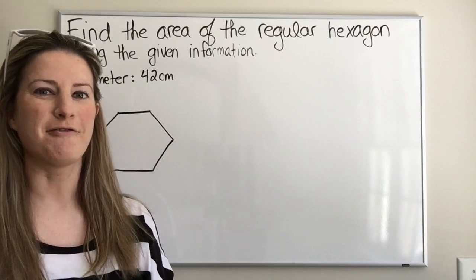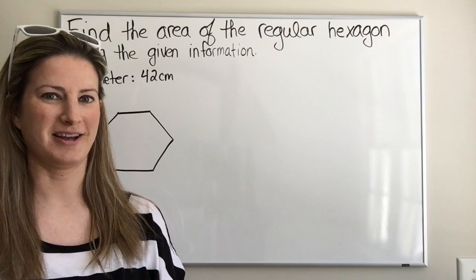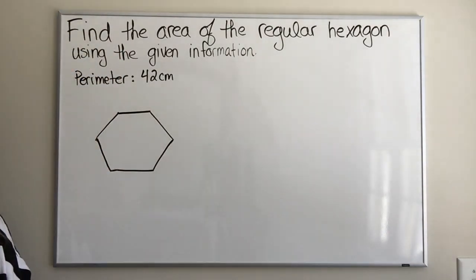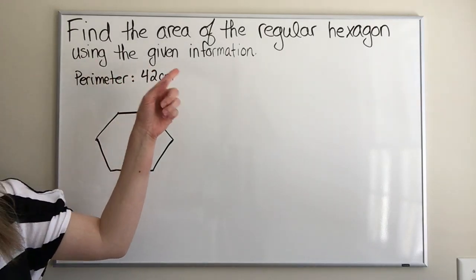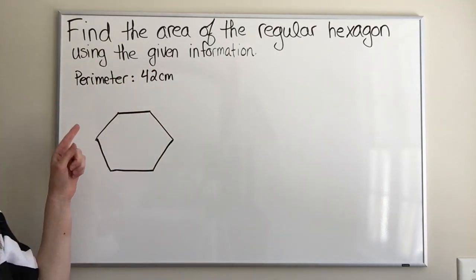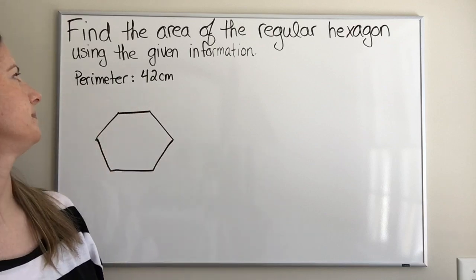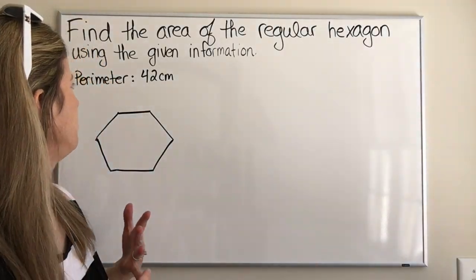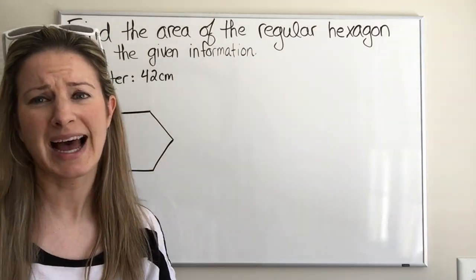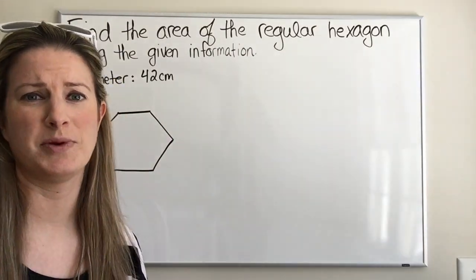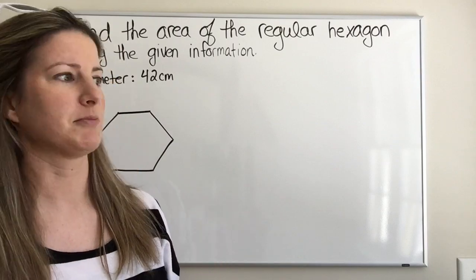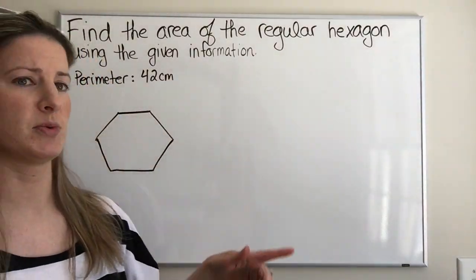Let's try to find the area of regular polygons. Take a look at this problem right here. We want to find the area of the regular hexagon using the given information. The given information could be the perimeter, a side length, a radius, or an apothem. In this case, we got the perimeter.